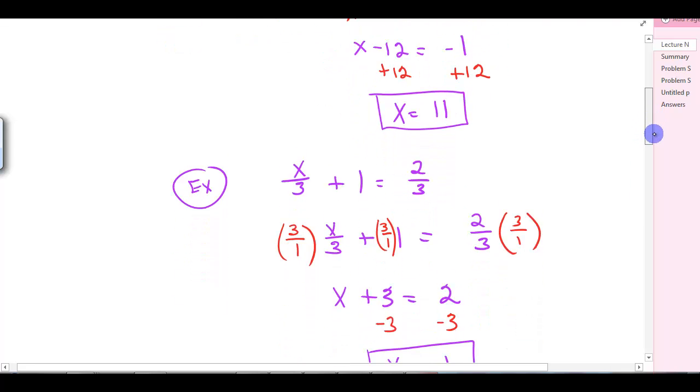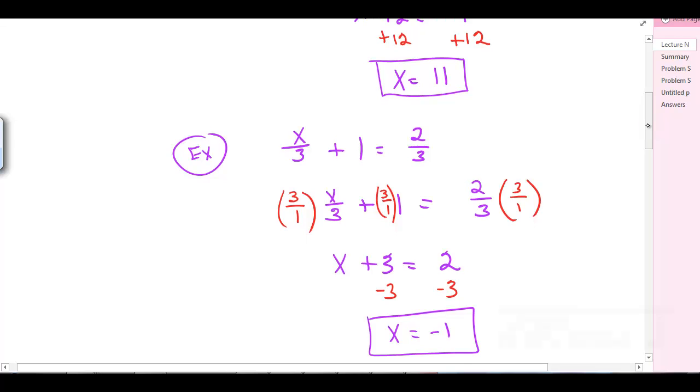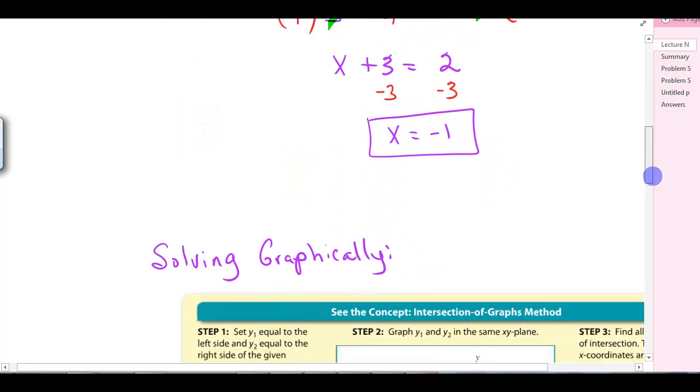Another example would be x over 3 plus 1 equals 2 thirds. When you have fractions, you want to get rid of the common denominator. The common denominator is 3, so multiply by 3 over 1 at every piece of the equation. When you do that, the 3s cancel out, and you're left with x plus 3 equals 2. Subtract 3 from both sides, and we're left with x equals negative 1.